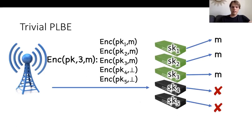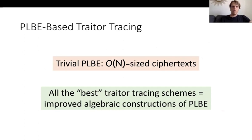Building private linear broadcast encryption is actually very easy if you ignore the parameter sizes. You just give every user a distinct independent secret key for a public key encryption scheme. When you want to encrypt to all users less than or equal to j, you simply encrypt the message separately to each of those users, and for the remaining users you put some dummy message — say a special symbol ⊥. All users above j won't be able to decrypt, and only a user knows whether or not they were able to decrypt. So the trivial PLBE achieves linear-sized ciphertext, and all of the best traitor tracing schemes give improved algebraic constructions of PLBE, relying on the theorem of Boneh-Sahai-Waters to derive new traitor tracing schemes.